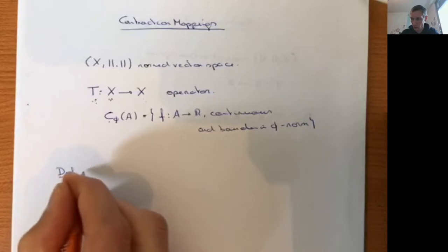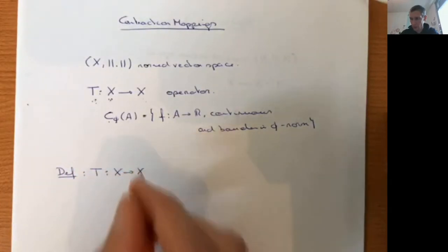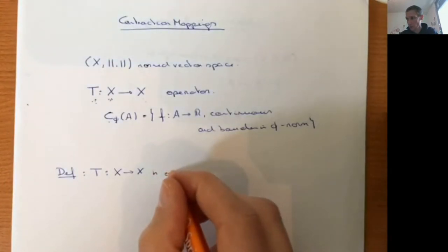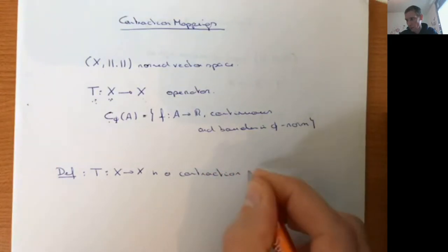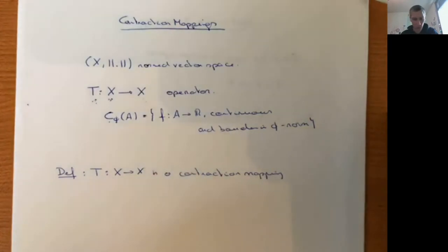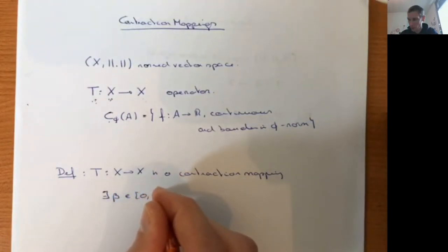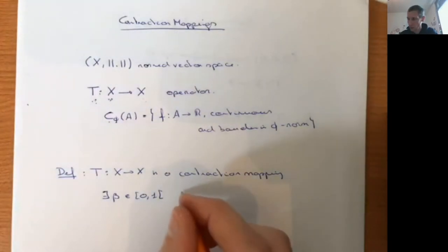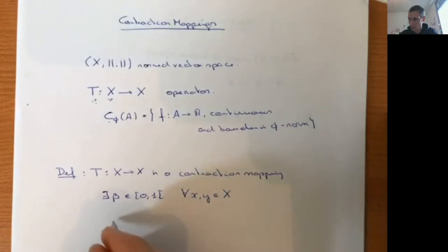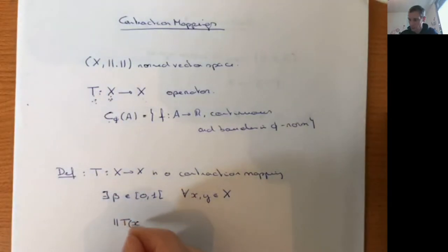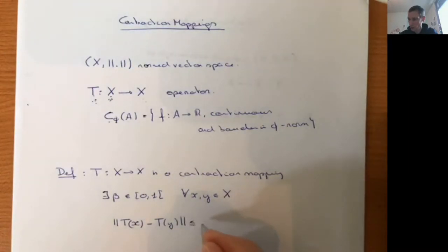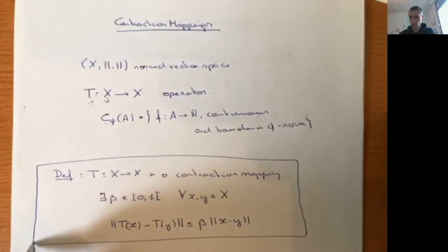We define the operator T: X → X to be a contraction mapping if the following holds: there exists a number beta between 0 and 1 (strictly smaller than 1), such that for all x and y in the vector space, the distance between Tx and Ty is less than or equal to beta times the distance between x and y. This is the definition of a contraction mapping.